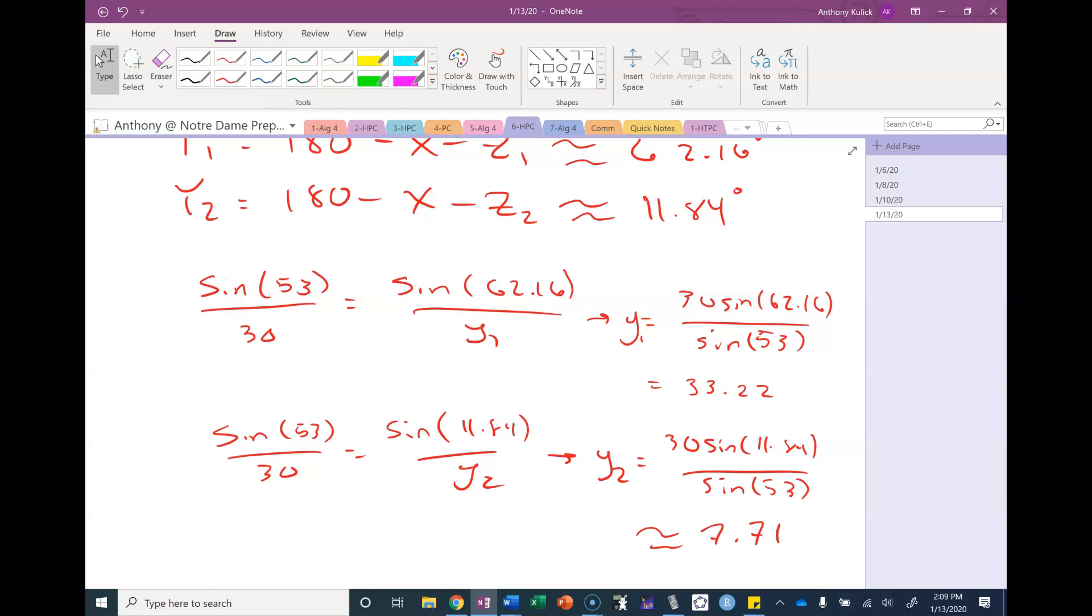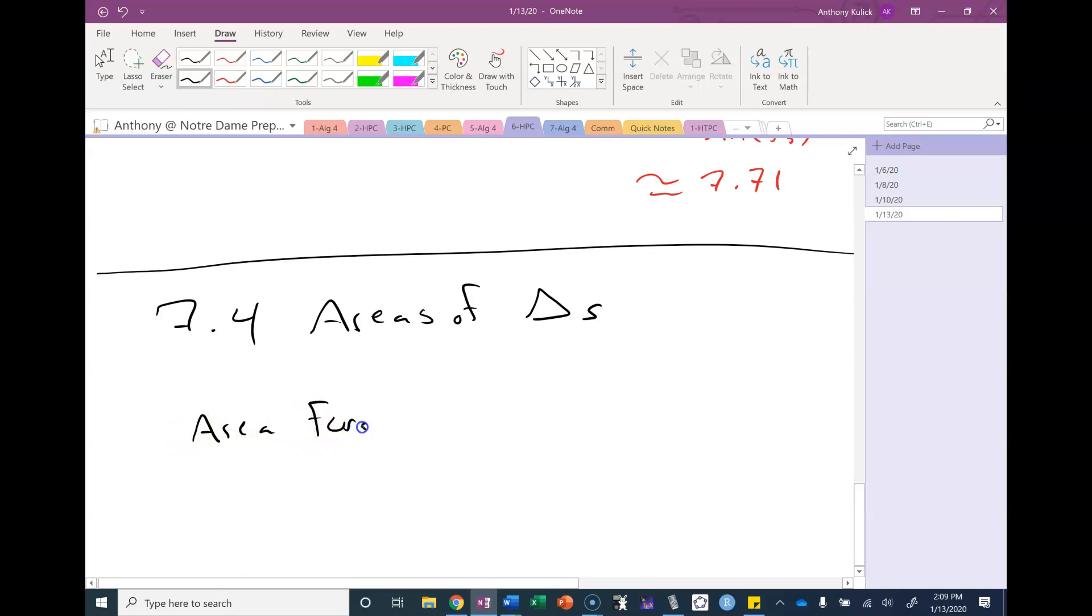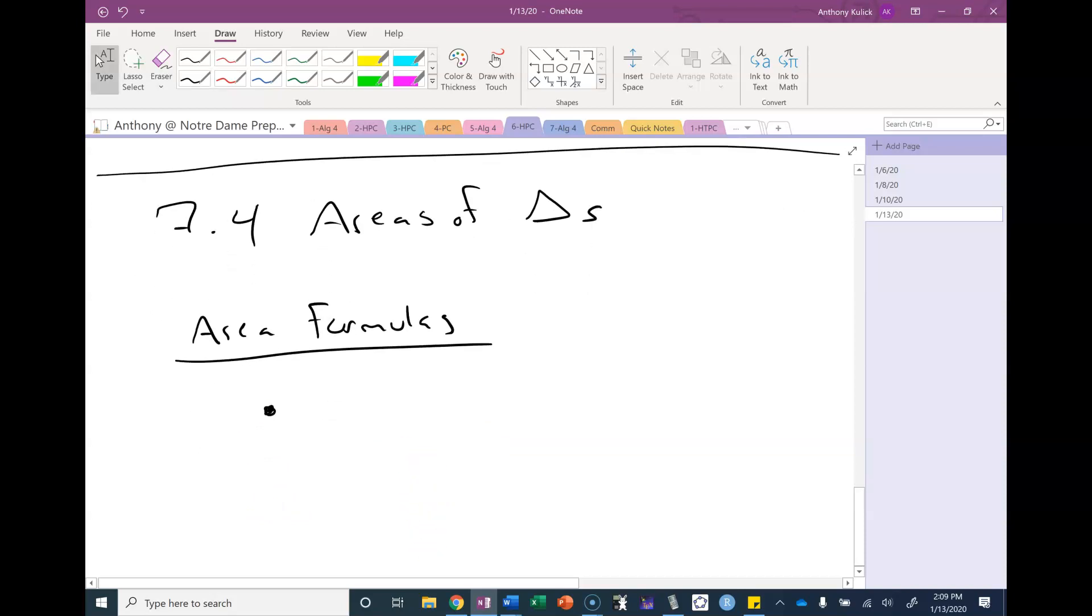If you remember that, usually things go okay. Any other questions from this assignment? On to section 4. Section 4 is about areas of triangles. From geometry, you guys should remember an area formula for a triangle, which is one half base times height.